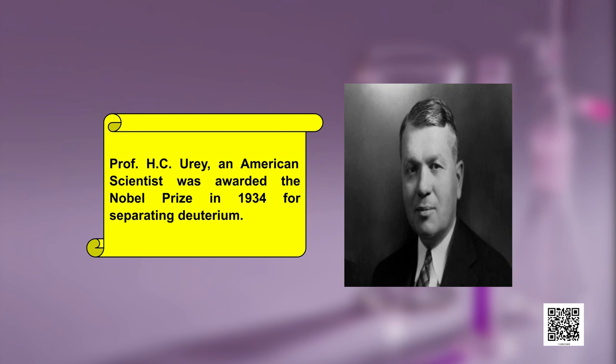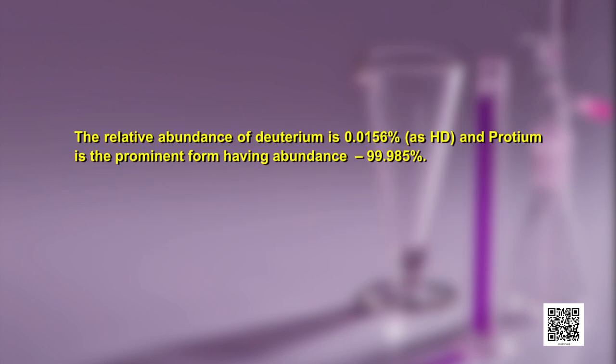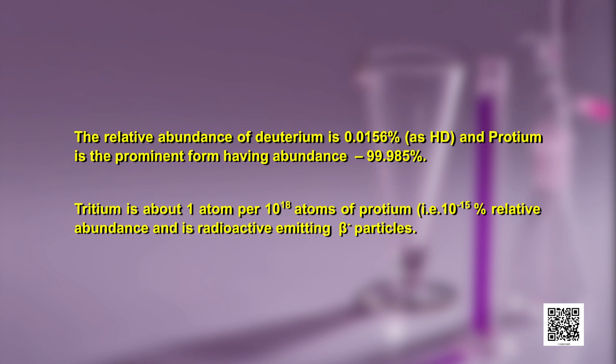Professor H.C. Urey, an American scientist, received the Nobel Prize in 1934 for separating deuterium. The relative abundance of deuterium is 0.0156 percent as HD, while protium is the prominent form having an abundance of 99.985 percent. For tritium, it is just 1 atom per 10¹⁸ atoms of protium and its relative abundance is 10⁻¹⁵ percent — very very low in abundance. It is also the only radioactive isotope of hydrogen and it emits beta particles.